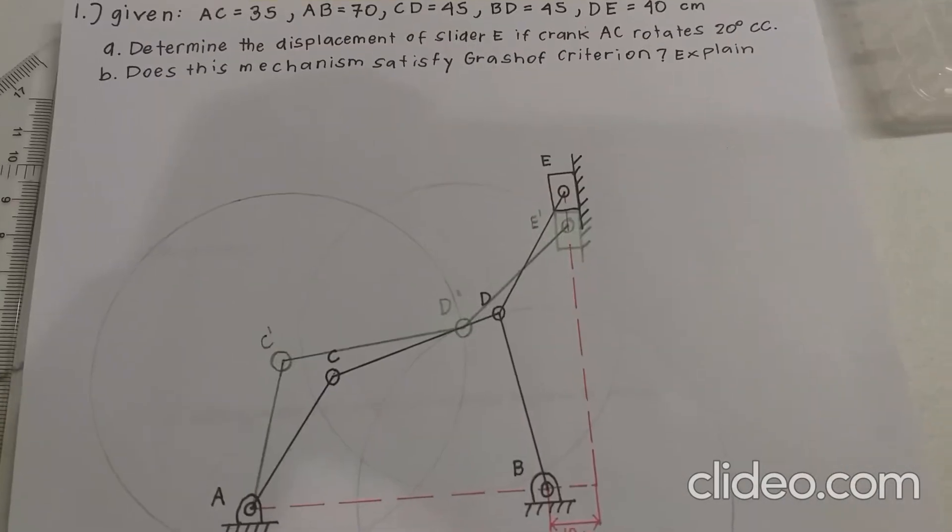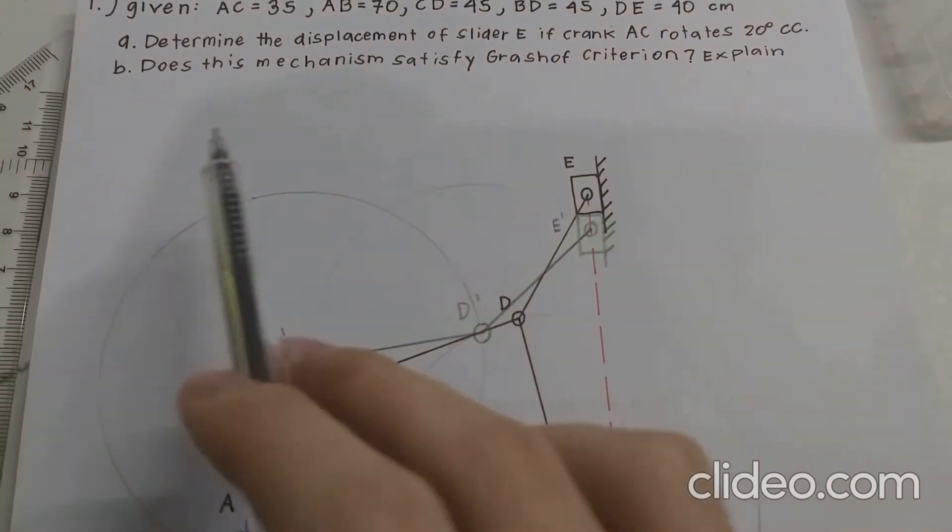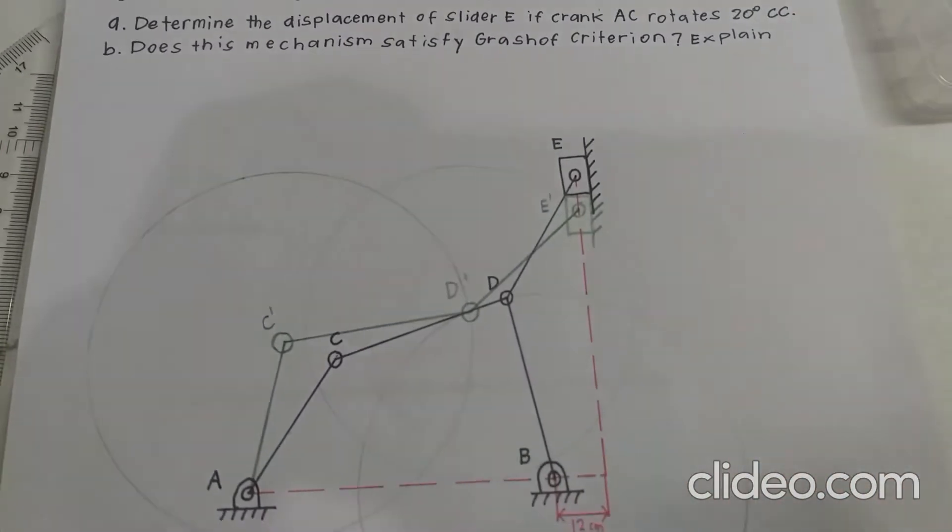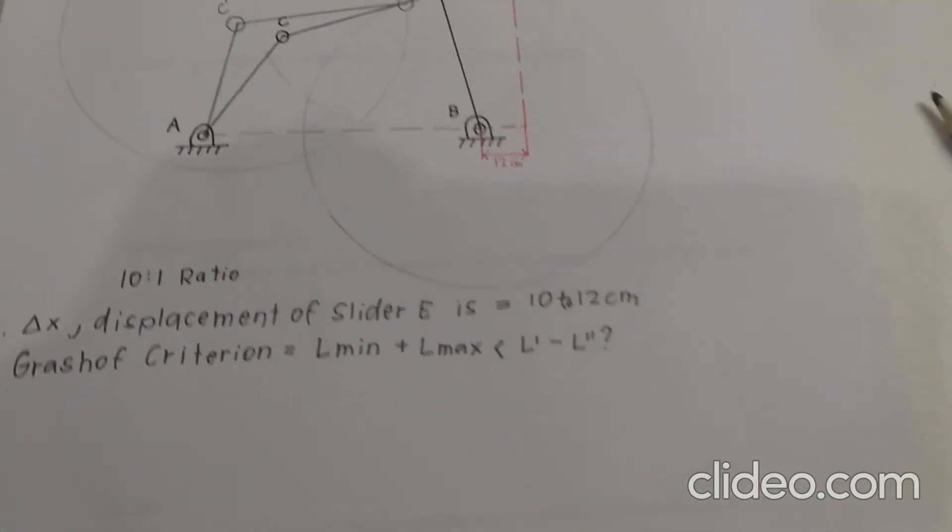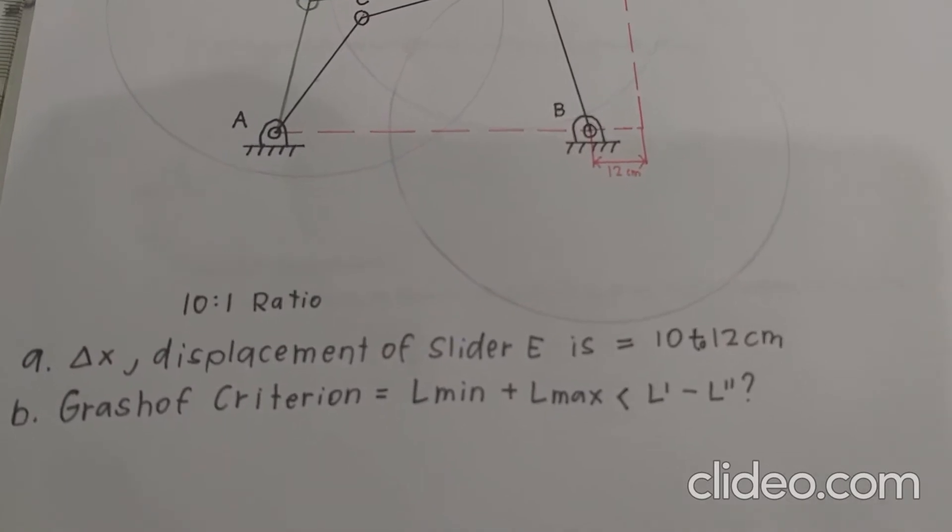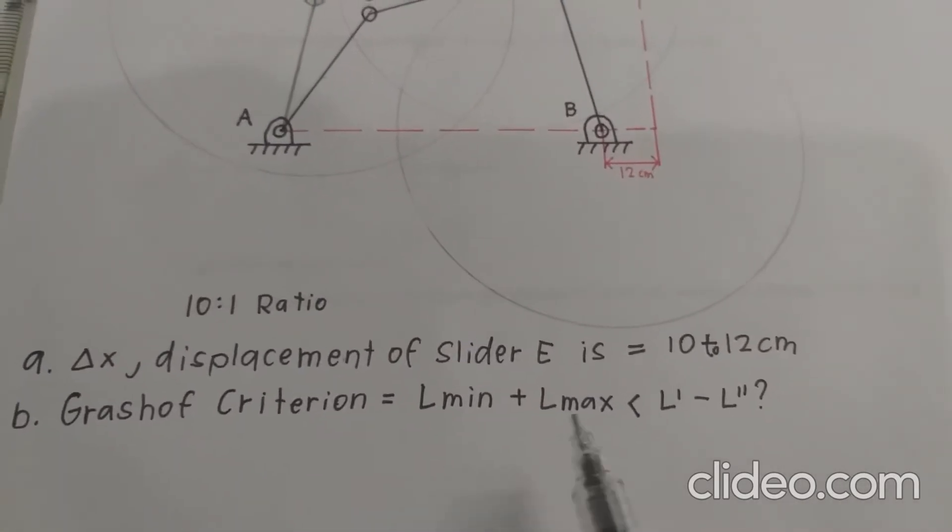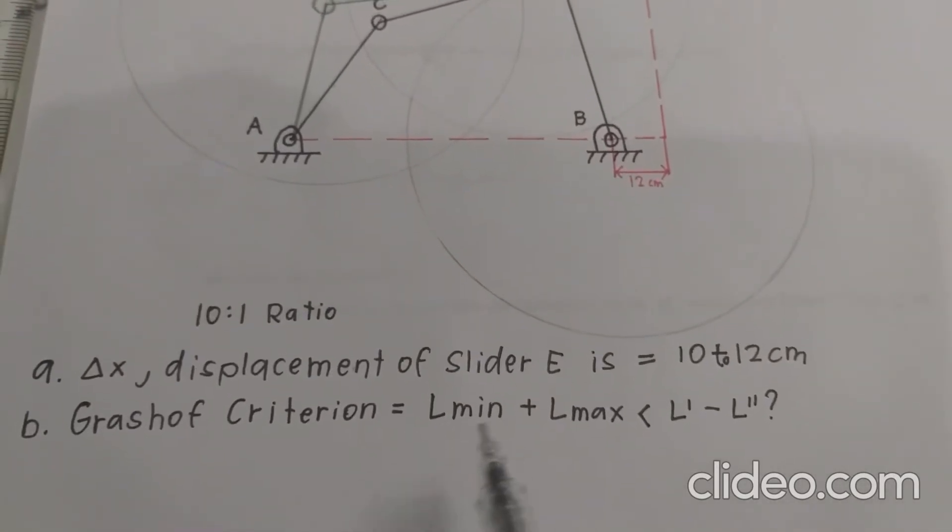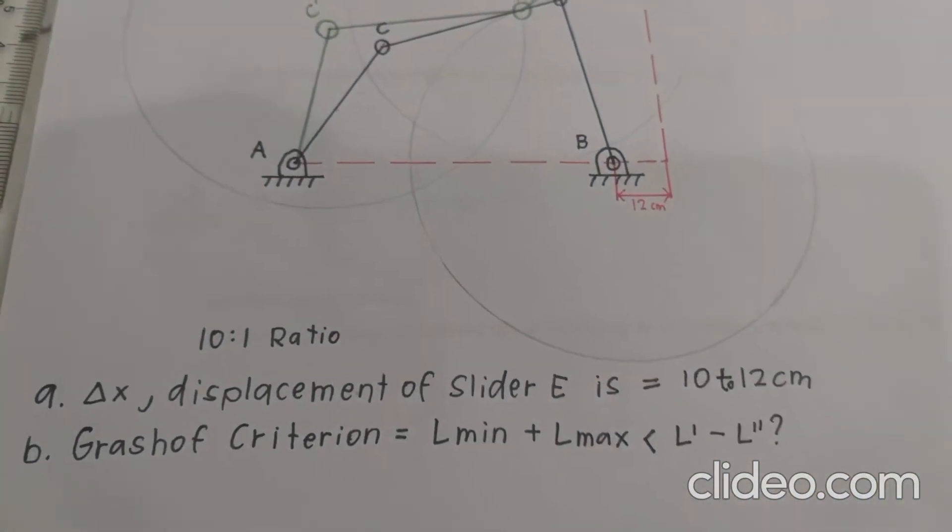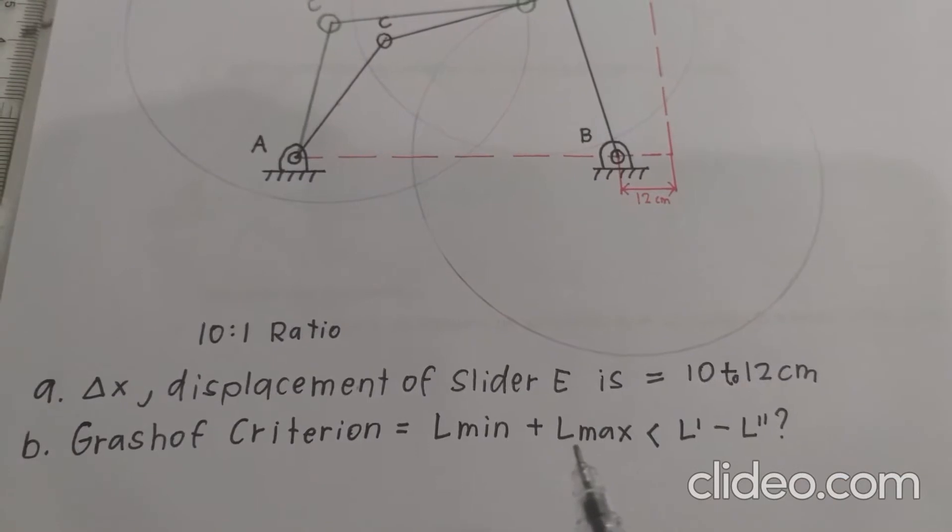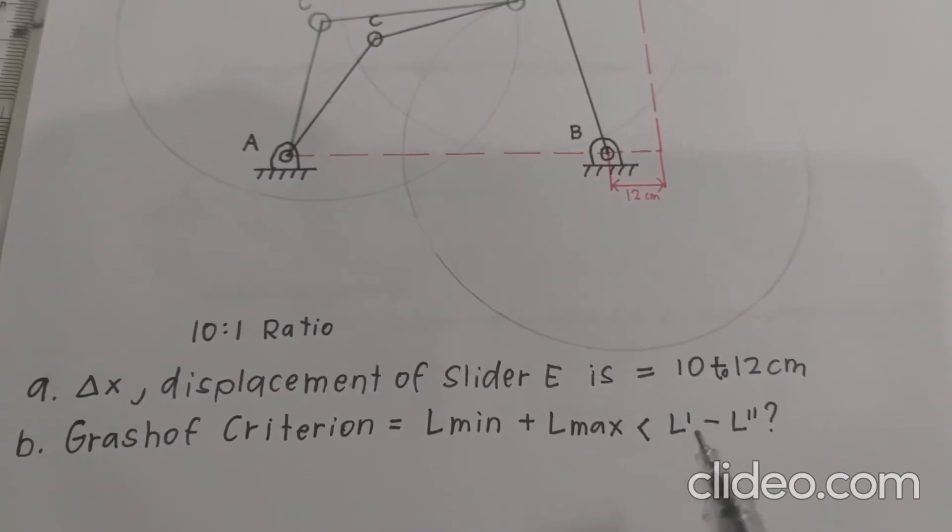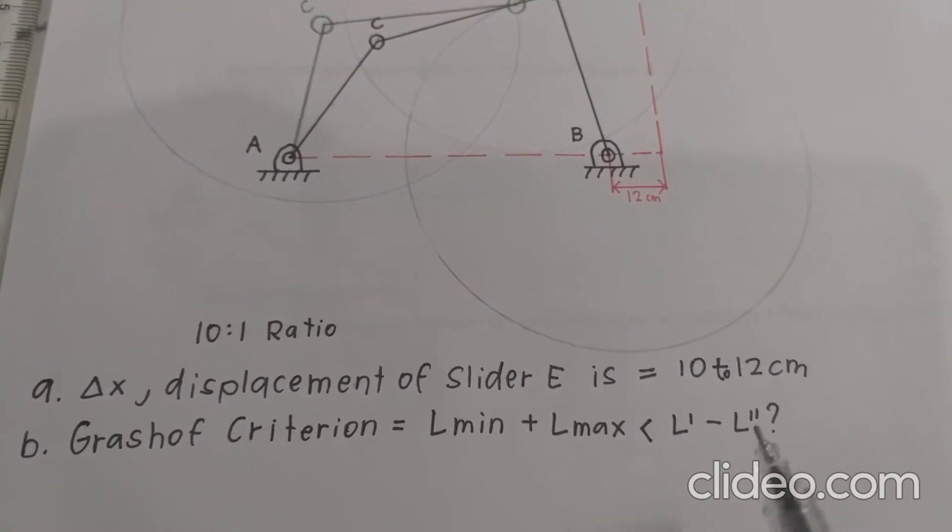Part B of question 1 asks, does this mechanism satisfy Grashev's criterion? Explain. Okay, so let's look at the formula for Grashev's criterion, which basically asks if the minimum length of the four links plus the maximum length is less than L prime plus L double prime.